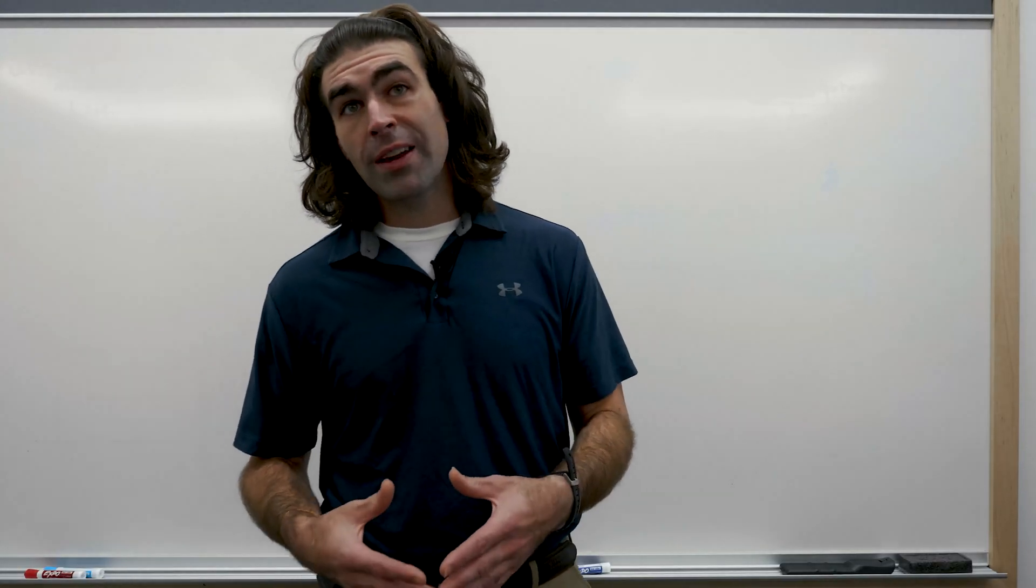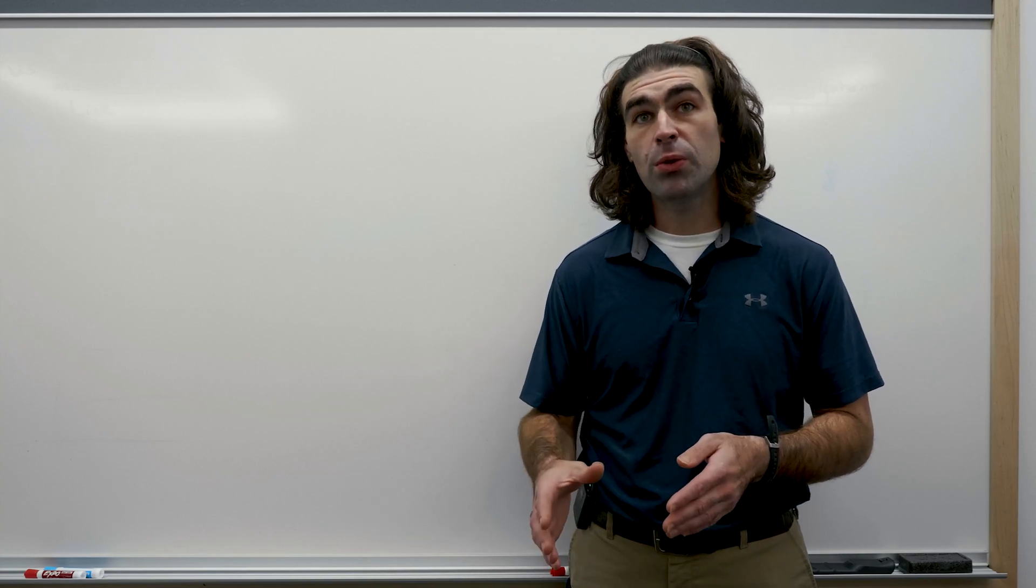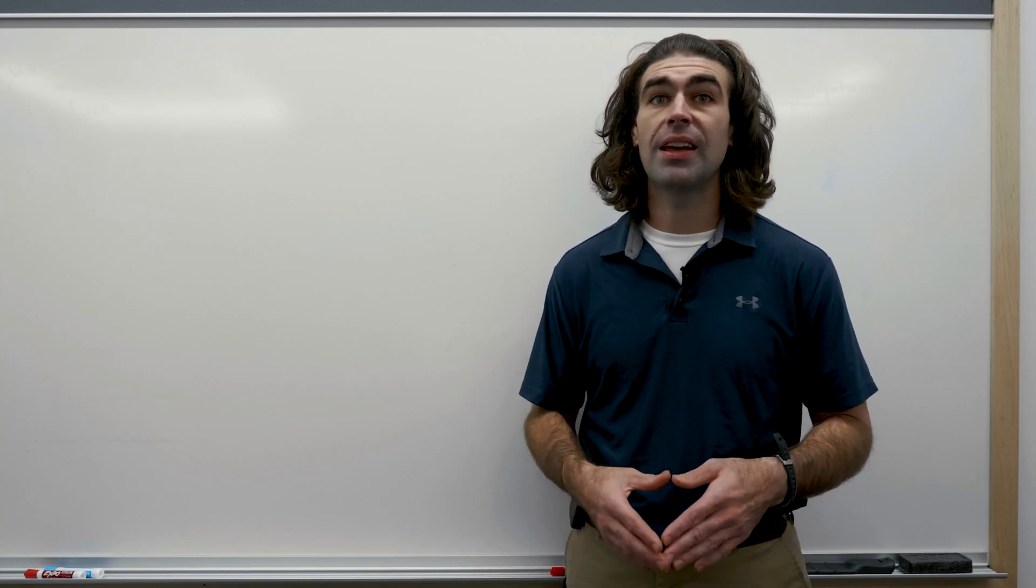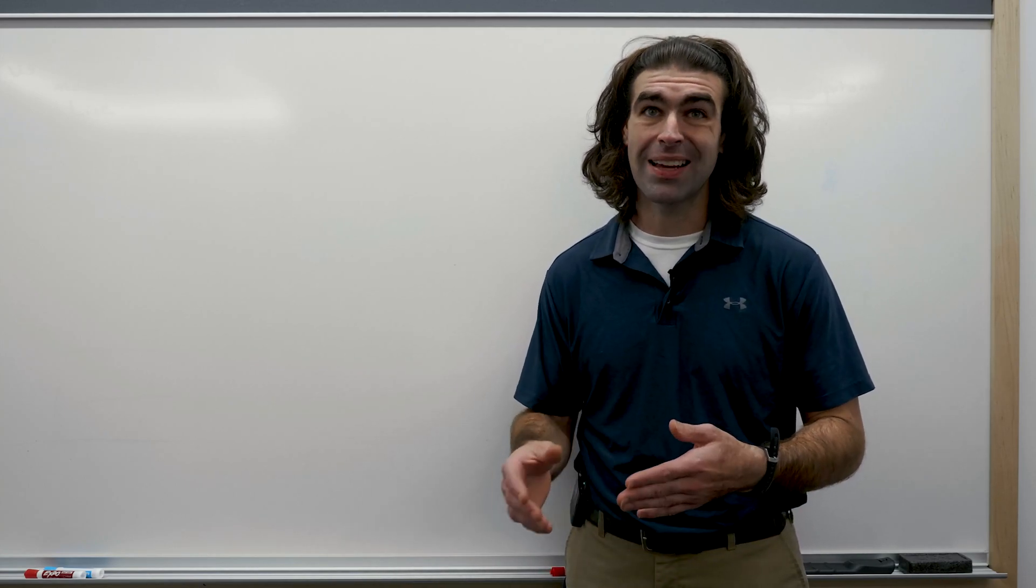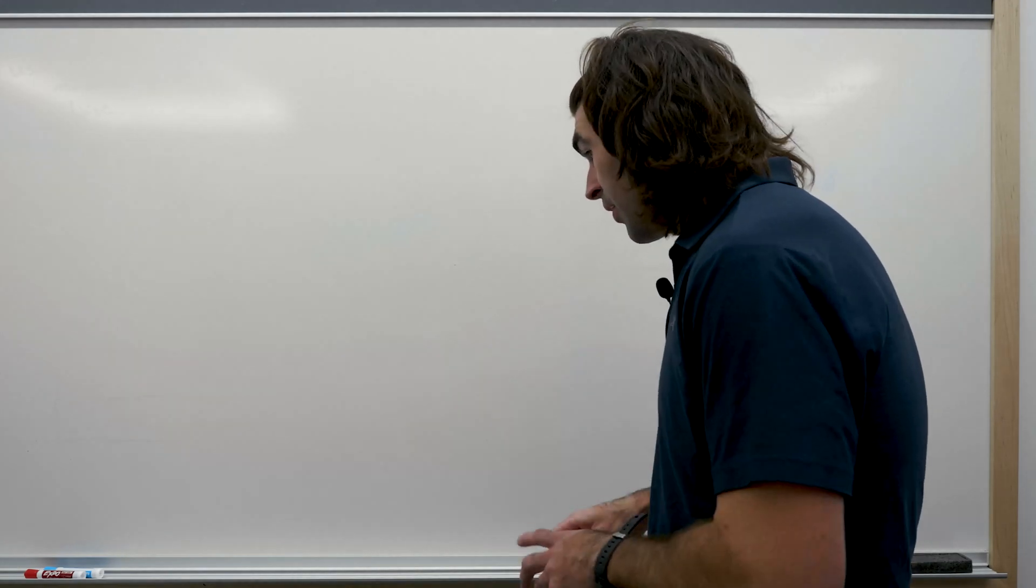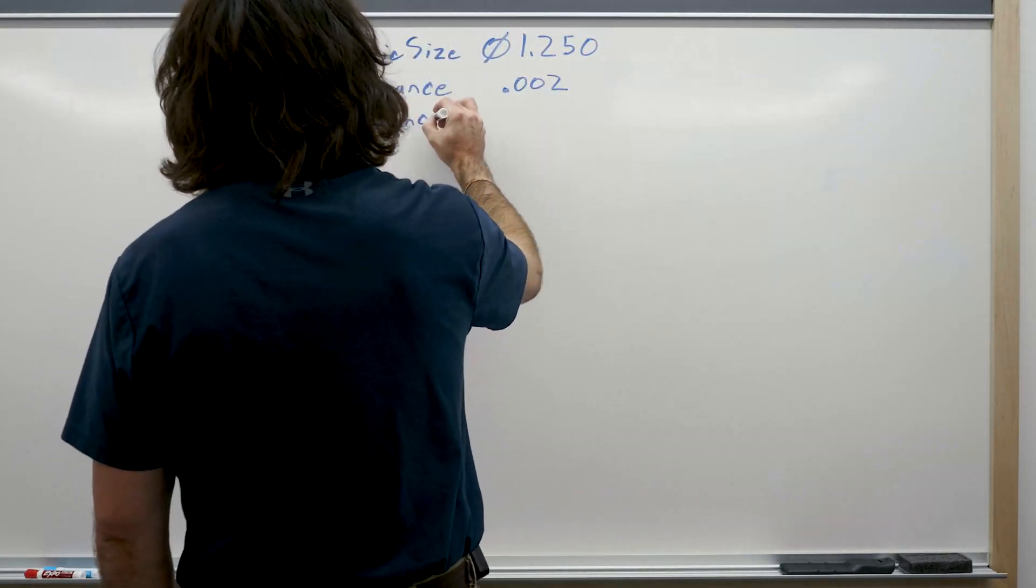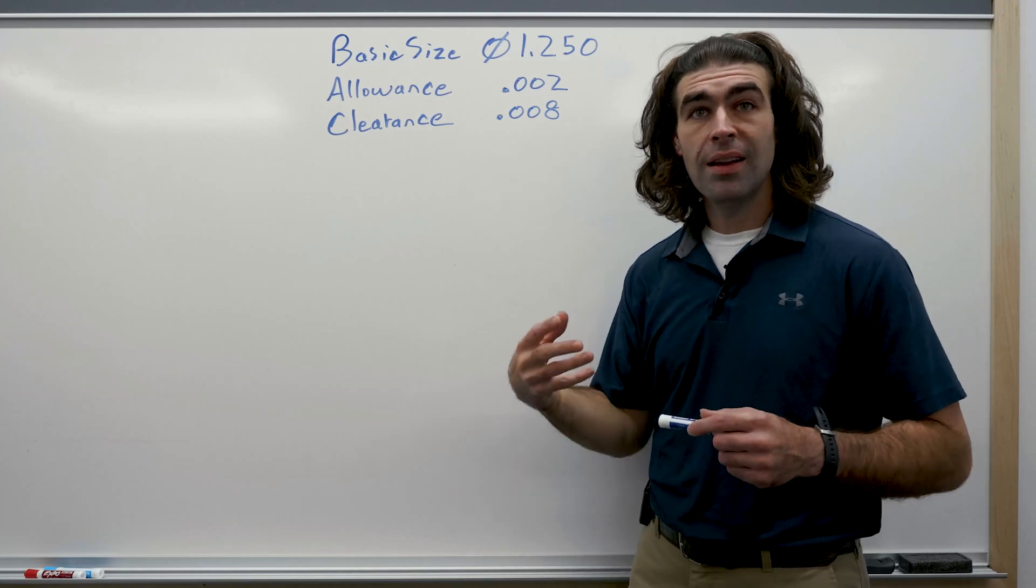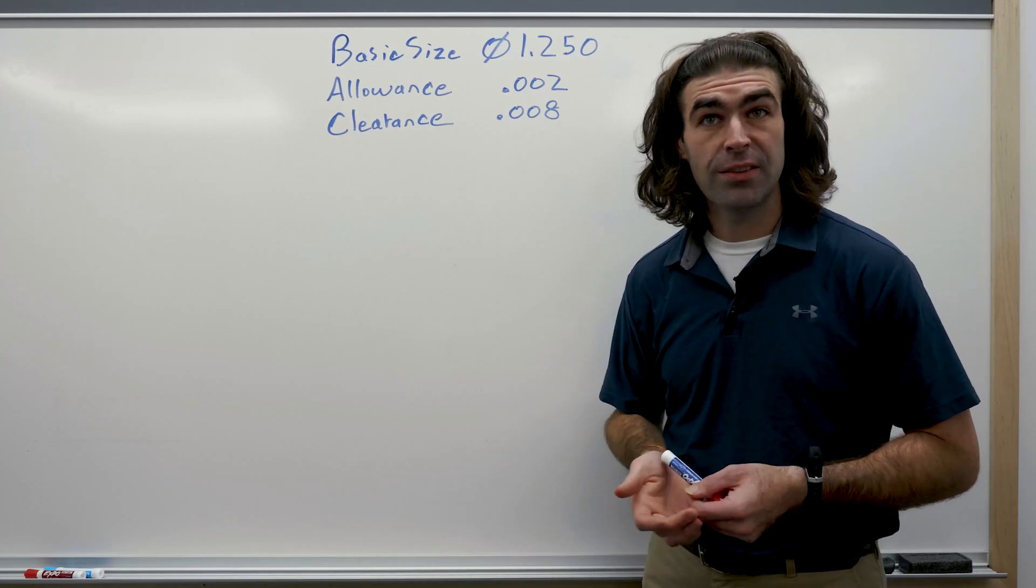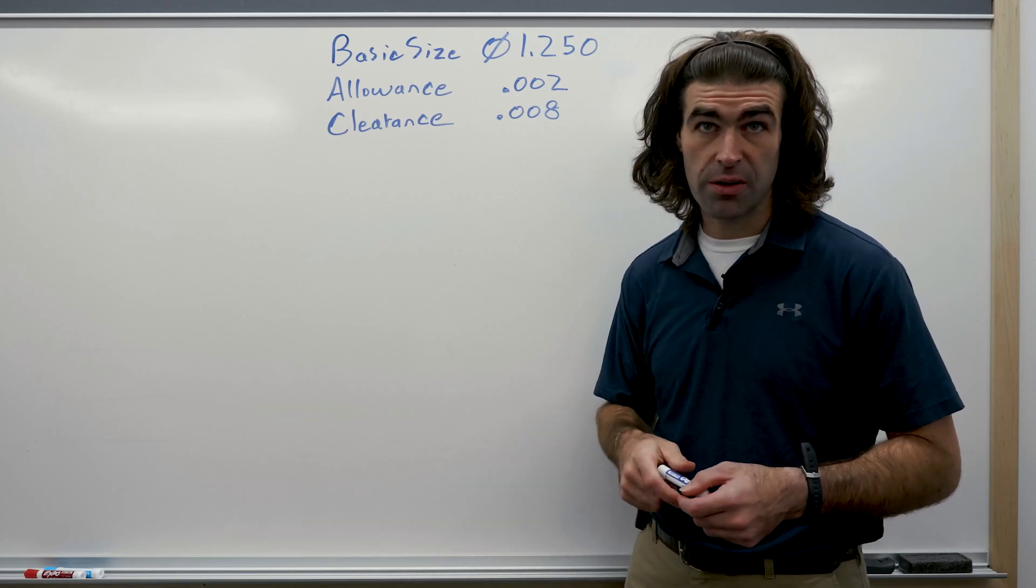So let's dive in. I've chosen one and a quarter inch for my basic size and I've chosen two thousandths for my allowance and eight thousandths for my clearance. So I'll write that on the board real quick so we have a common place to start from. Basic size of 1.250, allowance of 0.002, clearance of 0.008. You got to have these numbers to get started.